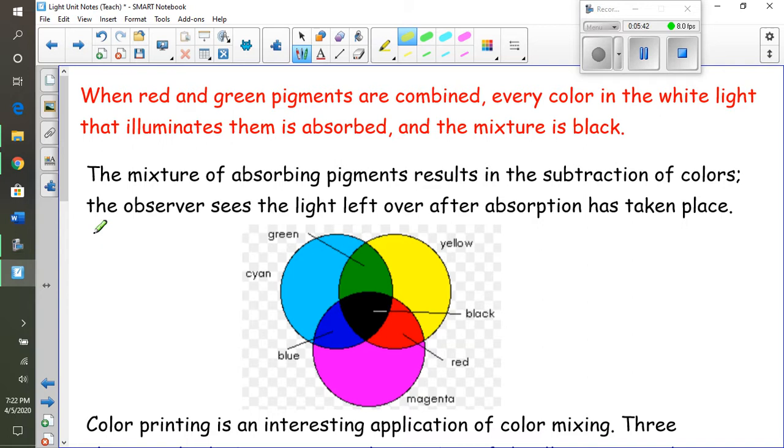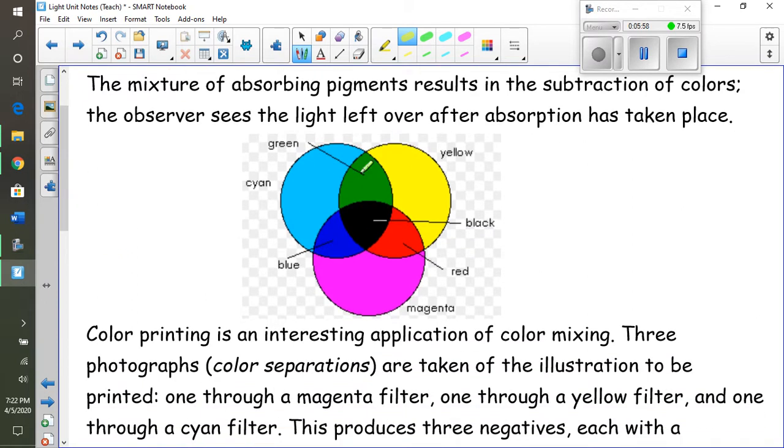So red and green kind of makes this black. The mixture of absorbing pigments results in the subtraction of colors. So the observer sees the light left over after absorption has taken place. So we kind of get this graph right here.